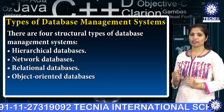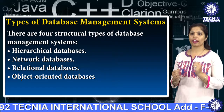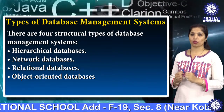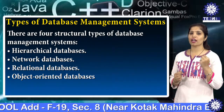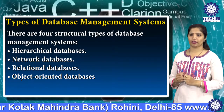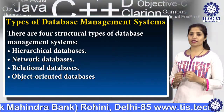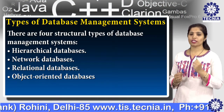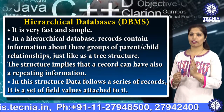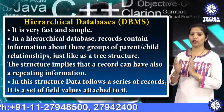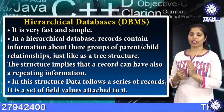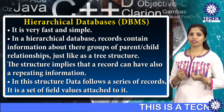There are four structural types of database management systems. The first one is hierarchical database, the second is network database, the third is relational database, and the fourth one is object-oriented database. Let's discuss them one by one. In the hierarchical database model, it is a very fast and simple database.